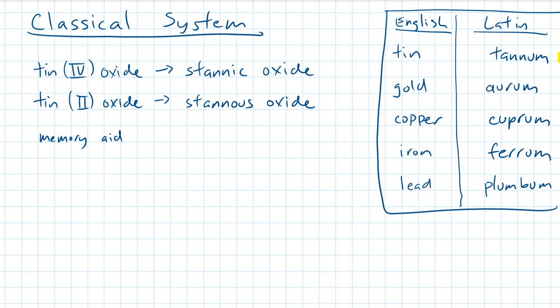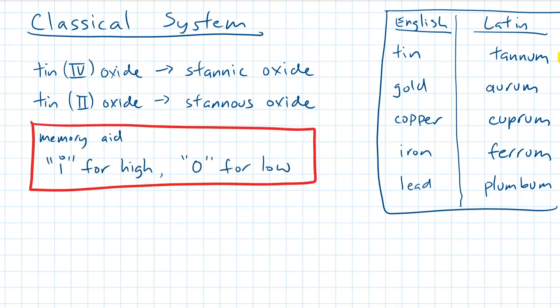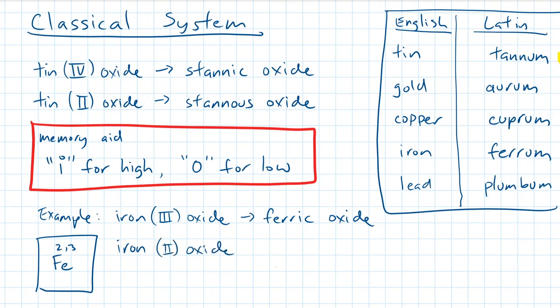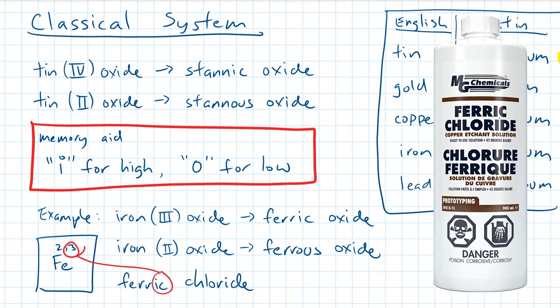A good memory aid for classical naming system is I for high, O for low. So if you are looking for iron 3 oxide for a science fair project, you would look for ferric oxide. And if you are looking for iron 2 oxide, you would look for ferrous oxide. And if you are looking for ferric chloride, you would be looking for FeCl3.